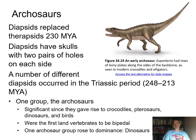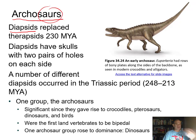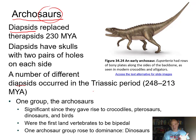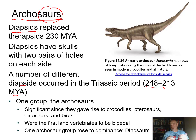Now looking at the diapsids, which had two extra holes in their skull. The diapsids include a group called the archosaurs—'saur' roughly means lizard. They have the diapsid skull with two pairs of holes on each side. One group of archosaurs gave rise to crocodiles, pterosaurs like pterodactyls, the dinosaurs, and modern birds. So mammals came from therapsids which were synapsids, while the diapsids gave rise to dinosaurs, crocodiles, and birds.